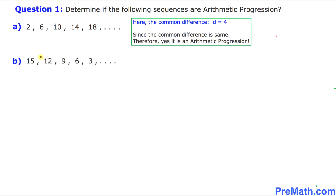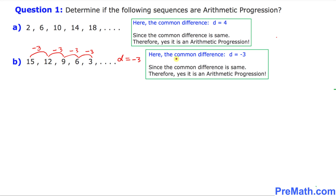Part B — we look at the common difference. Starting with the first two terms, we get to the next term by adding negative 3, likewise negative 3 again, and negative 3 again. We see a consistent pattern: the common difference D equals negative 3, which is the same no matter how far you go. Since the common difference is constant, yes, this is indeed an arithmetic progression.